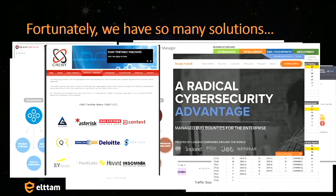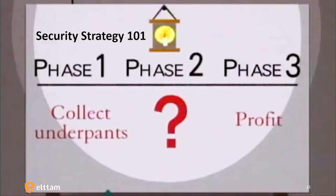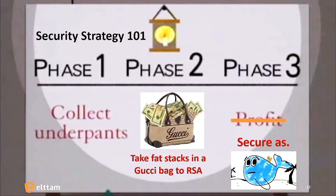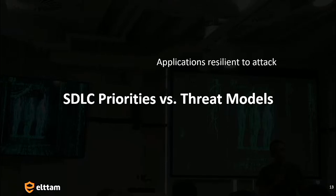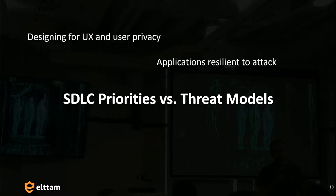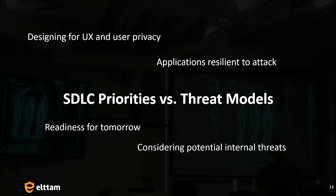The point of this talk is to try to put context around: how do you start thinking about this problem? How do you make informed decisions about what goes where? For Security Strategy 101, what I've seen is basically CISOs taking heaps of money to conferences like RSA in San Francisco, walking through the vendor hall, getting swayed, spending a fortune on vendor products, and then spending years trying to implement them into their process. It just doesn't work. The SDLC priorities I talk about are aligned with threat modeling concepts: trying to make applications resilient to attack, designing for UX and user privacy, readiness for tomorrow, and considering potential internal threats.